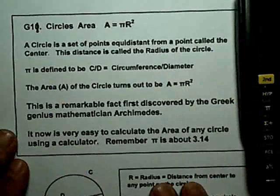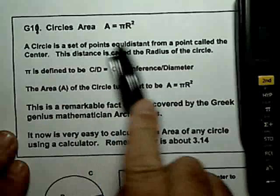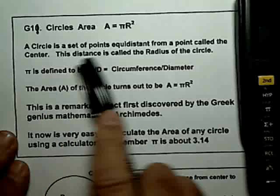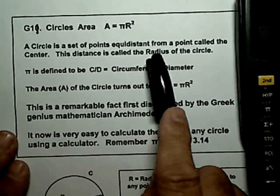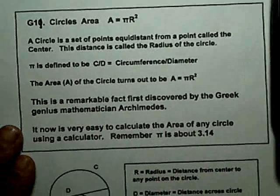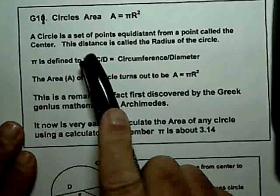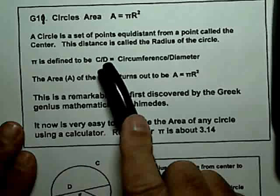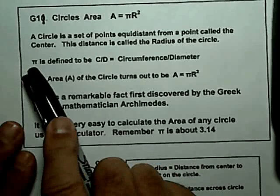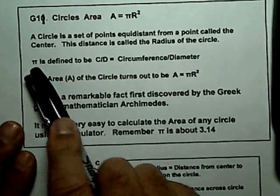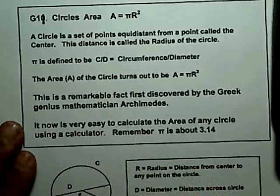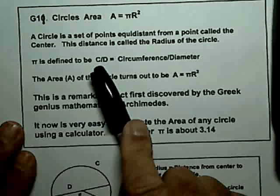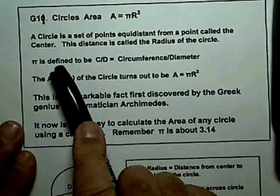I'll remind you that a circle is a set of points equidistant from a point called the center. The distance from that center point to the circle is called the radius. We defined last time that if you took the circumference of the circle and divided it by the diameter of the circle, that was a fixed number pi, and it didn't depend on the size of the circle. That led to the formula for the circumference, which is C equals 2πr.